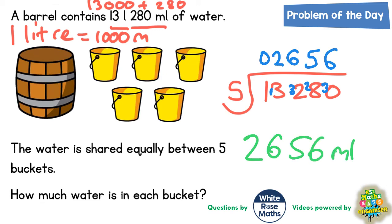If you did want to put that into litres because there's a thousand millilitres in a litre you simply divide this by a thousand and divide by a thousand you would end up with 2.656 litres.